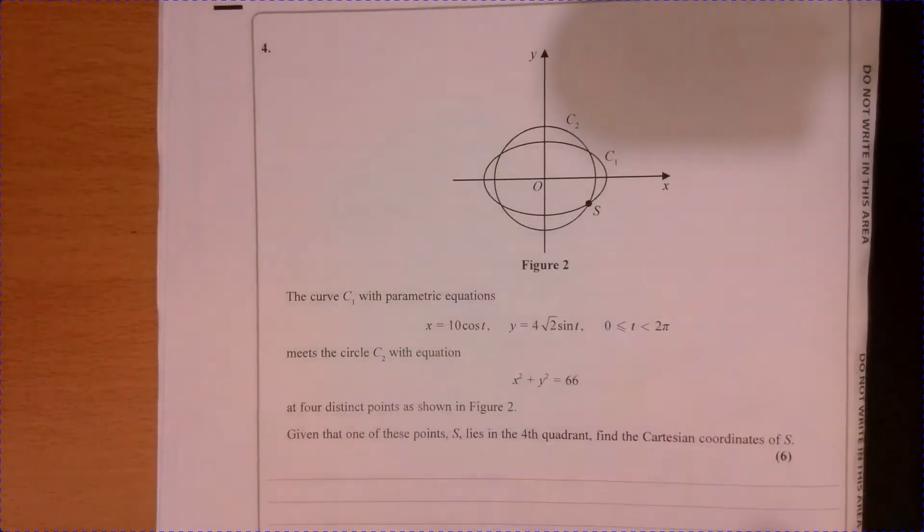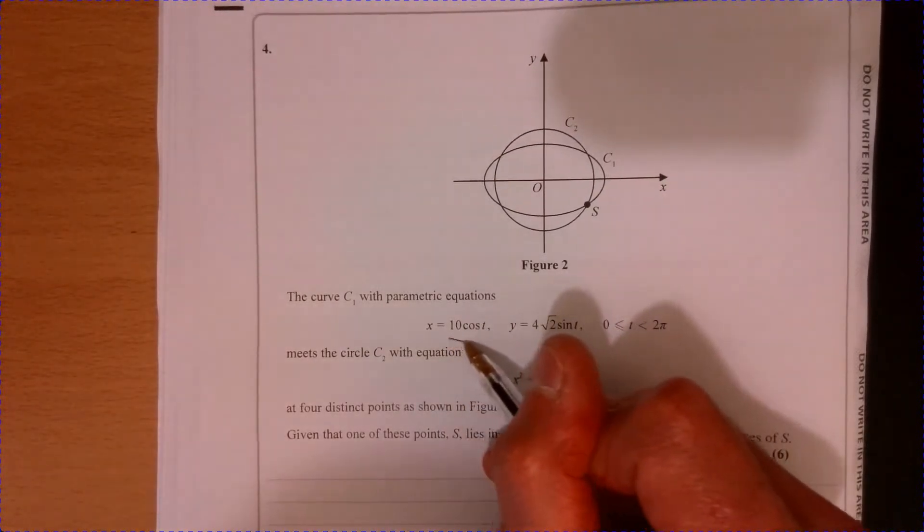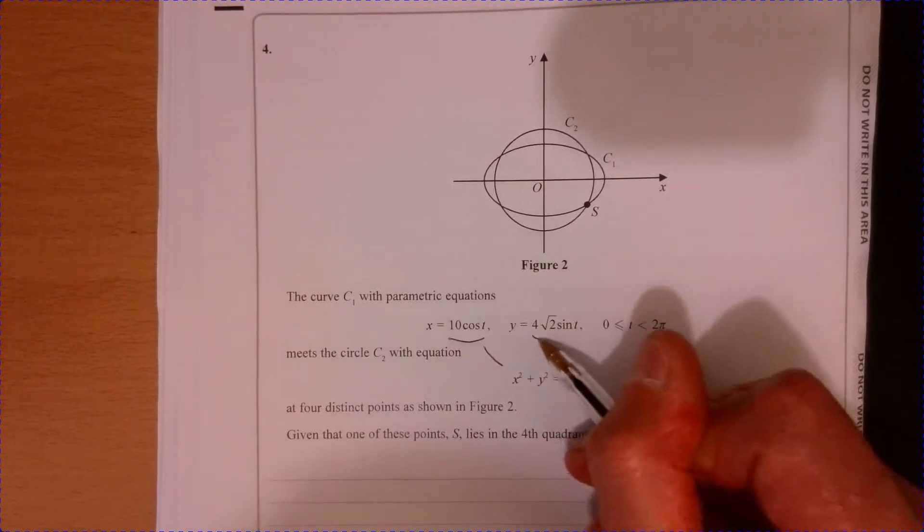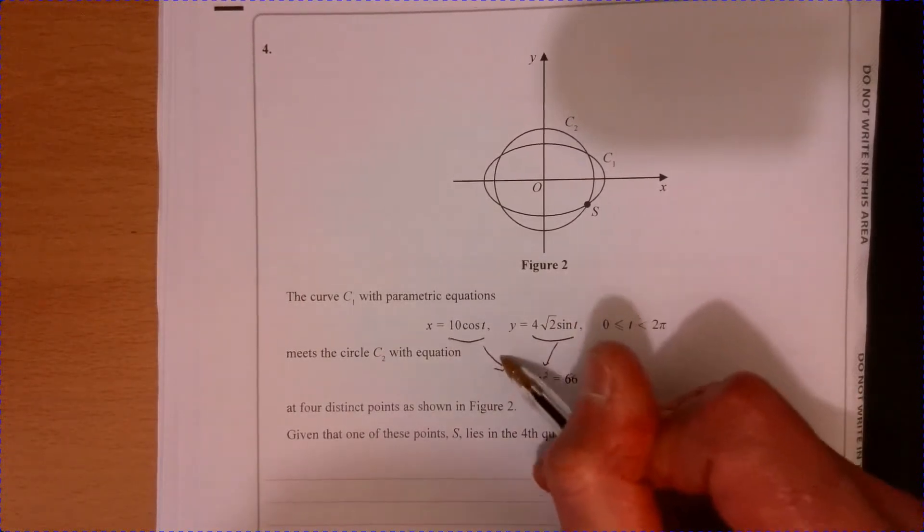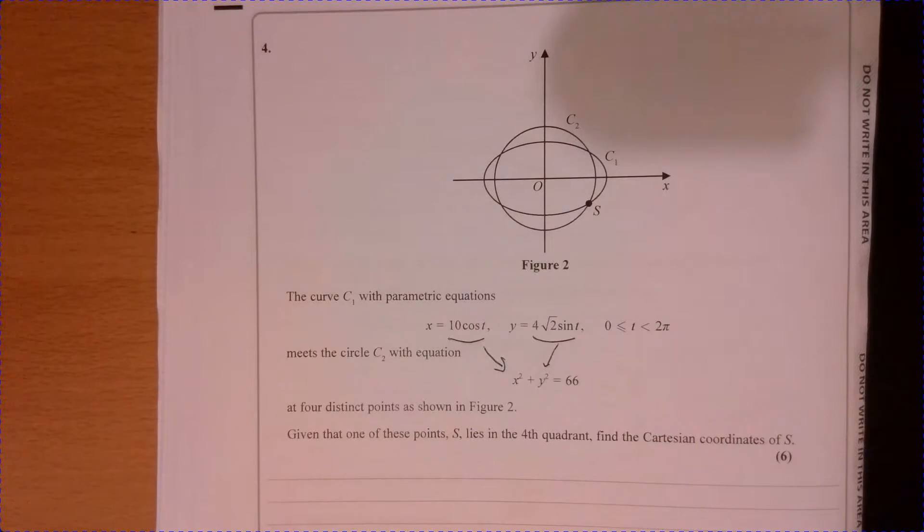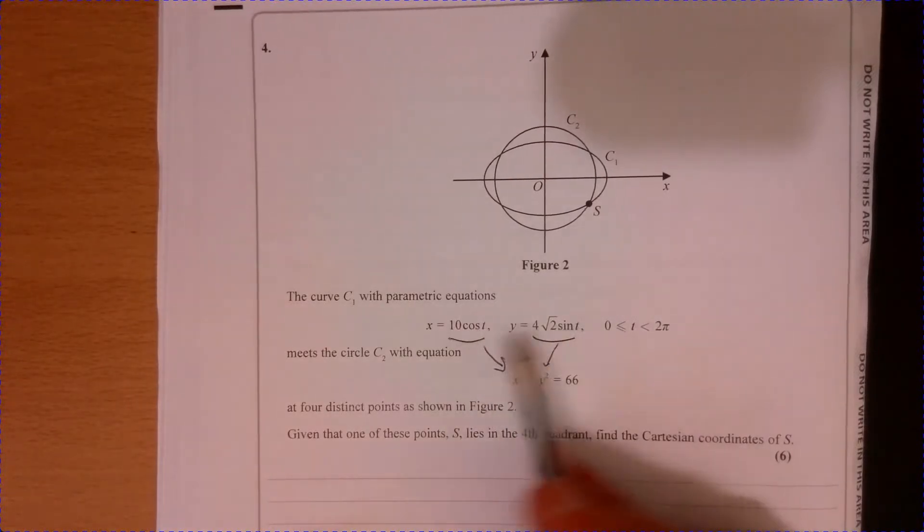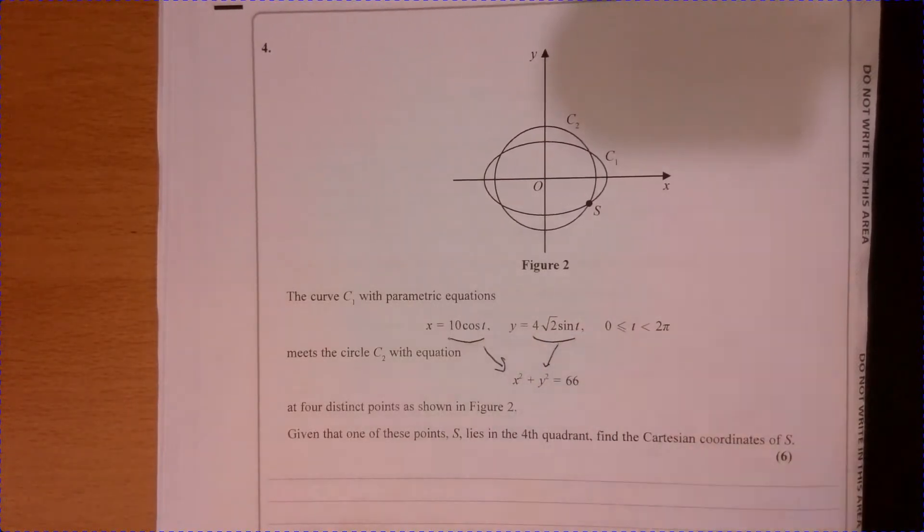I would start with this, right? I'm a little bit unsure of what to do. Well, let's just take these and just pop them in here. And effectively, what we're going to do is we're going to create an equation with only one thing that we don't know, the T bit.